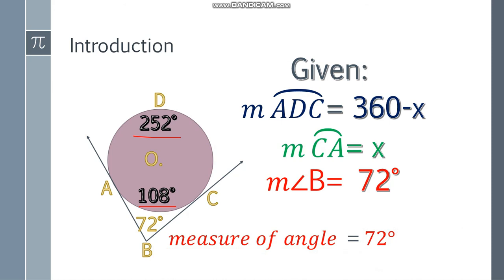So the measure of the larger intercepted arc, let's go back to the question, is 252 degrees. This is what you should answer.